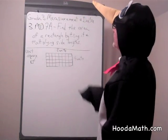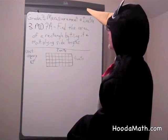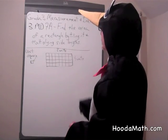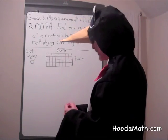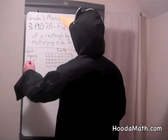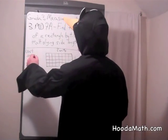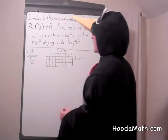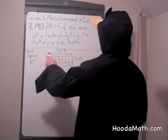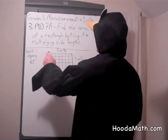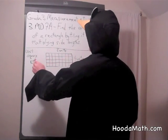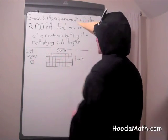Now, if we're trying to find the measurement of the area of a rectangle, we can do it by tiling it or multiplying the side lengths, and you'll get the same results. This is a unit square. We tiled this rectangle to see how many of these unit squares are in there.